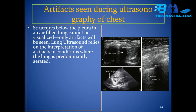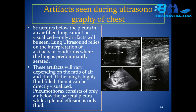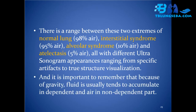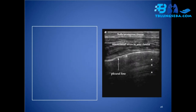Artifacts seen during ultrasonography of the chest: structures below the pleura in an air-filled lung cannot be visualized — only artifacts will be seen. Lung ultrasound relies on the interpretation of artifacts. In predominantly aerated lung, these artifacts vary depending on the ratio of air and fluid. If the lung is highly fluid-filled, it can be directly visualized. The spectrum ranges from: normal lung (98% air), interstitial syndrome (95% air), alveolar syndrome (10% air), to atelectasis (5% air), each with different ultrasonogram appearances. Because of gravity, fluid tends to accumulate in dependent parts and air in non-dependent parts.